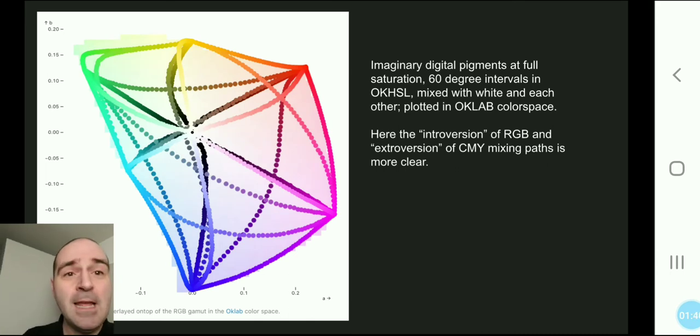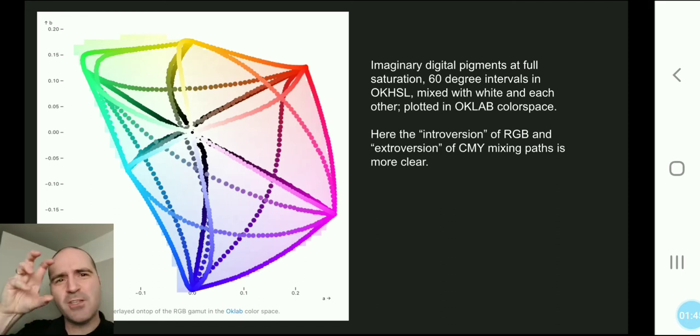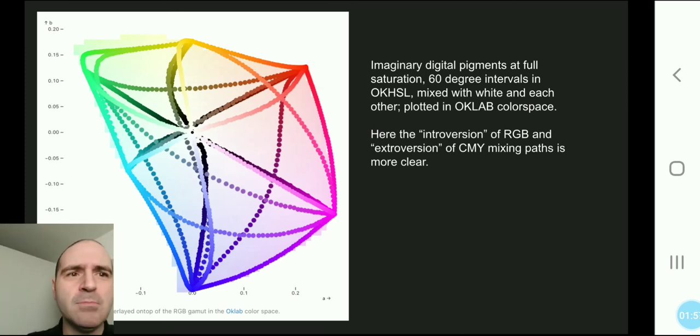we just look at the primaries and secondaries, white and black? You can kind of see a little bit more clearly what this three-dimensional space is and how the curves, again, move away from cyan, magenta, yellow, and squish in toward red, green, and blue.